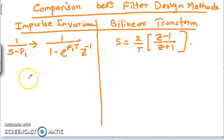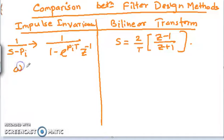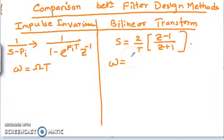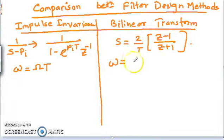The main problem in the impulse invariance method is aliasing. When mapping the analog frequency omega, the digital omega equals omega times T. However, in the bilinear transformation, the relationship is different — the digital omega becomes 2 * tan⁻¹(omega * T / 2), involving a trigonometric function.